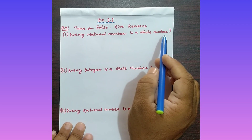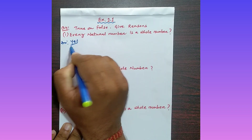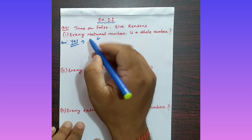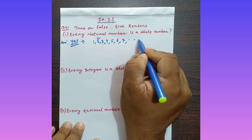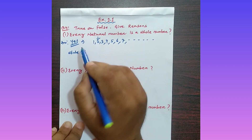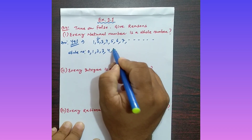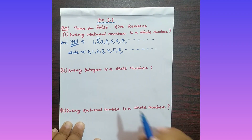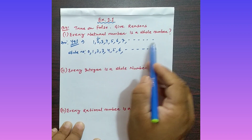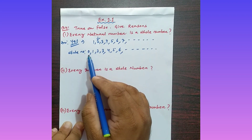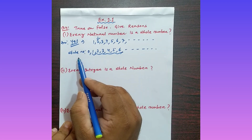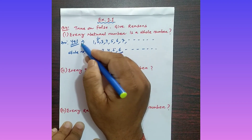Whole numbers start from zero: 0, 1, 2, 3, 4, 5, and so on to infinity. Natural numbers start from one: 1, 2, 3, and so on. Every natural number (1, 2, 3, ...) belongs to the set of whole numbers. So the statement 'every natural number is a whole number' is TRUE.